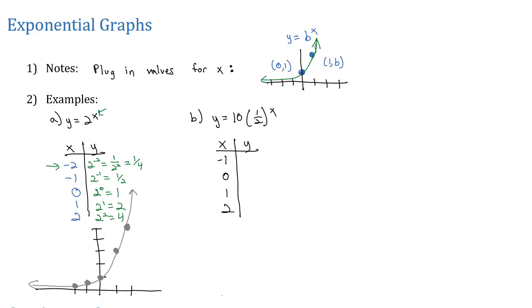When we plug negative 1 into this graph, we get 10 times 1 half to the negative 1. Well, 1 half to the negative 1 flips it over, giving us 10 times 2, which is 20. When we plug 0 in, we get 10 times 1 half to the 0. But that 1 half to the 0 is 1, so it's really 10 times 1 equals 10. When we plug in 1, we get 10 times 1 half to the first power, which is just half of 10, or 5.